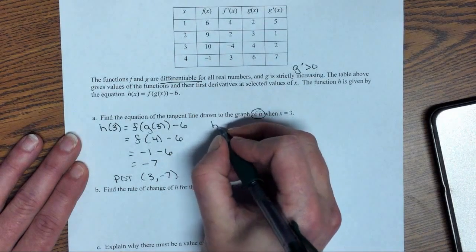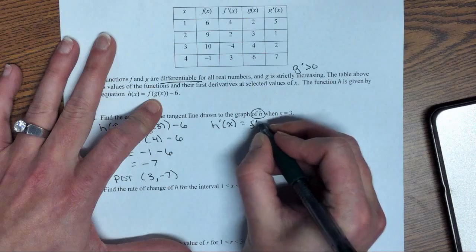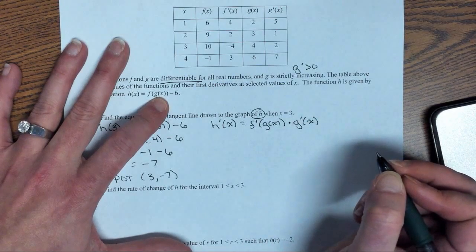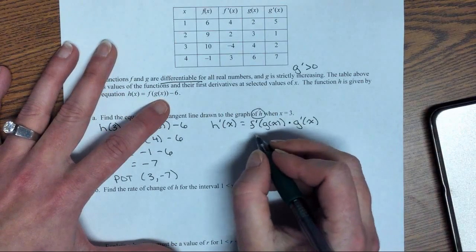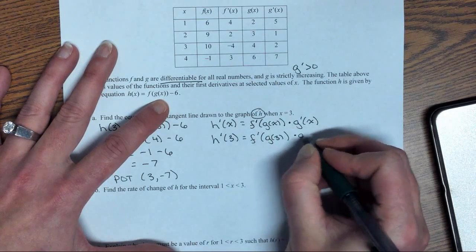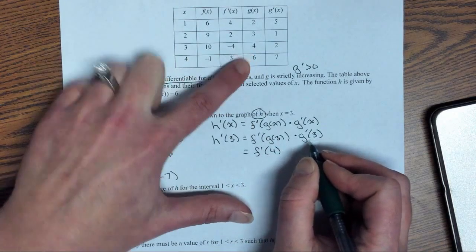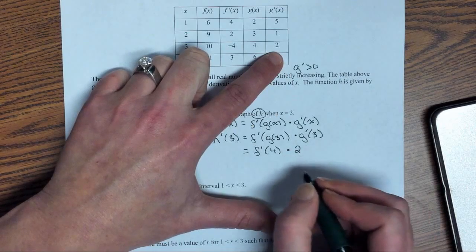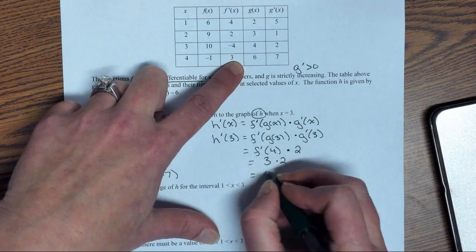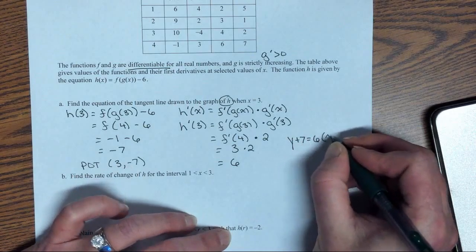Now we need the slope at that point. So let's think about the derivative when we have a chain rule. Well, we're supposed to take the derivative of the outside times the derivative of the inside. The 6 goes to zero. Now we're going to plug in 3. f'(g(3)) times g'(3). g(3) is 4, g'(3) is 2, f'(4) is 3. So now I have my slope. I have my point and I have my slope. y + 7 = 6(x - 3).